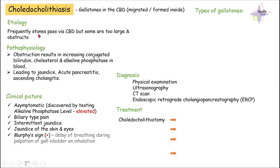Let's move to the etiology. Usually these gallstones are formed and they do pass through the common bile duct, but once in a while, when these stones are too large to pass through the common bile duct, they get stuck and obstruct it. This obstruction results in a series of problems, including accumulation of bile inside.